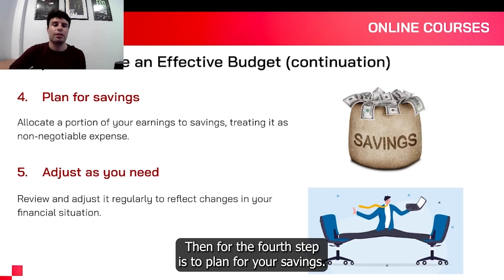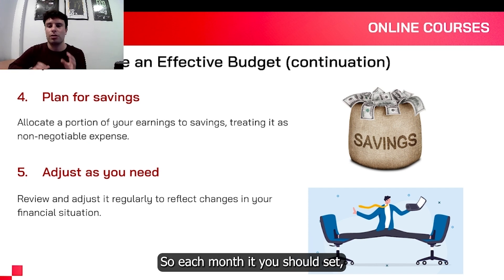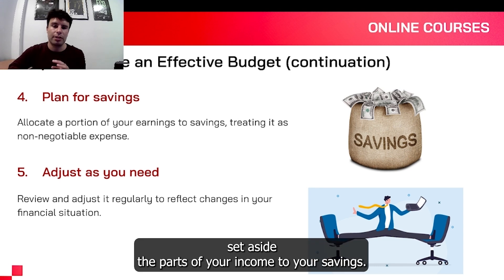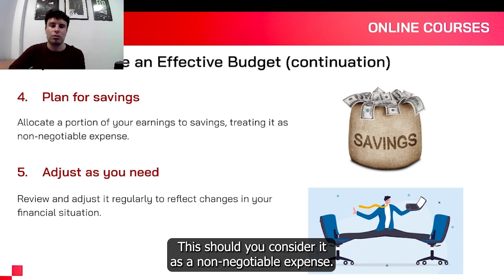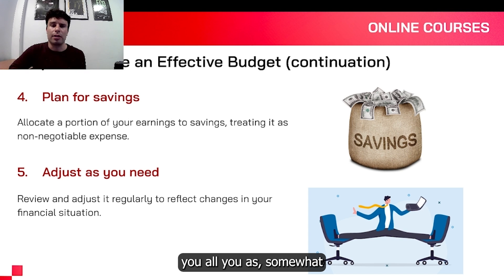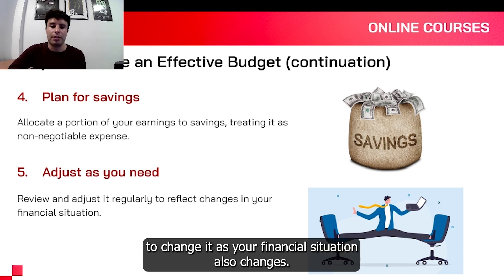Then for the fourth step, it's to plan for your savings. Each month, you should set aside a part of your income for savings. You should consider this as a non-negotiable expense. It's also important that you have a somewhat flexible budget in order to change it as your financial situation also changes.